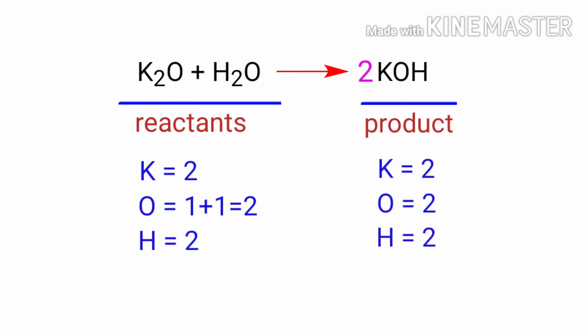The equation is now balanced. There are two potassium atoms, two oxygen atoms, and two hydrogen atoms on both sides.